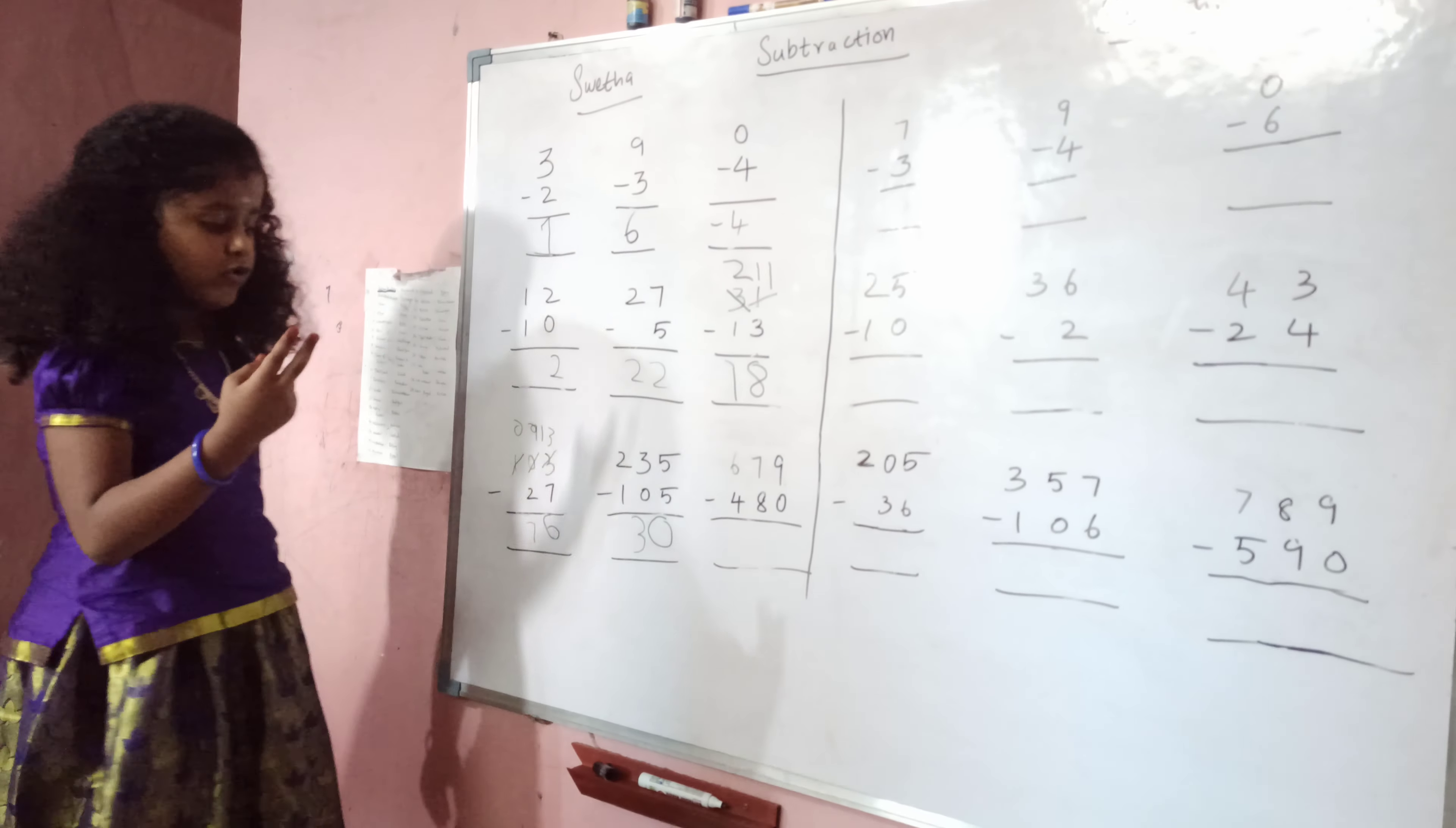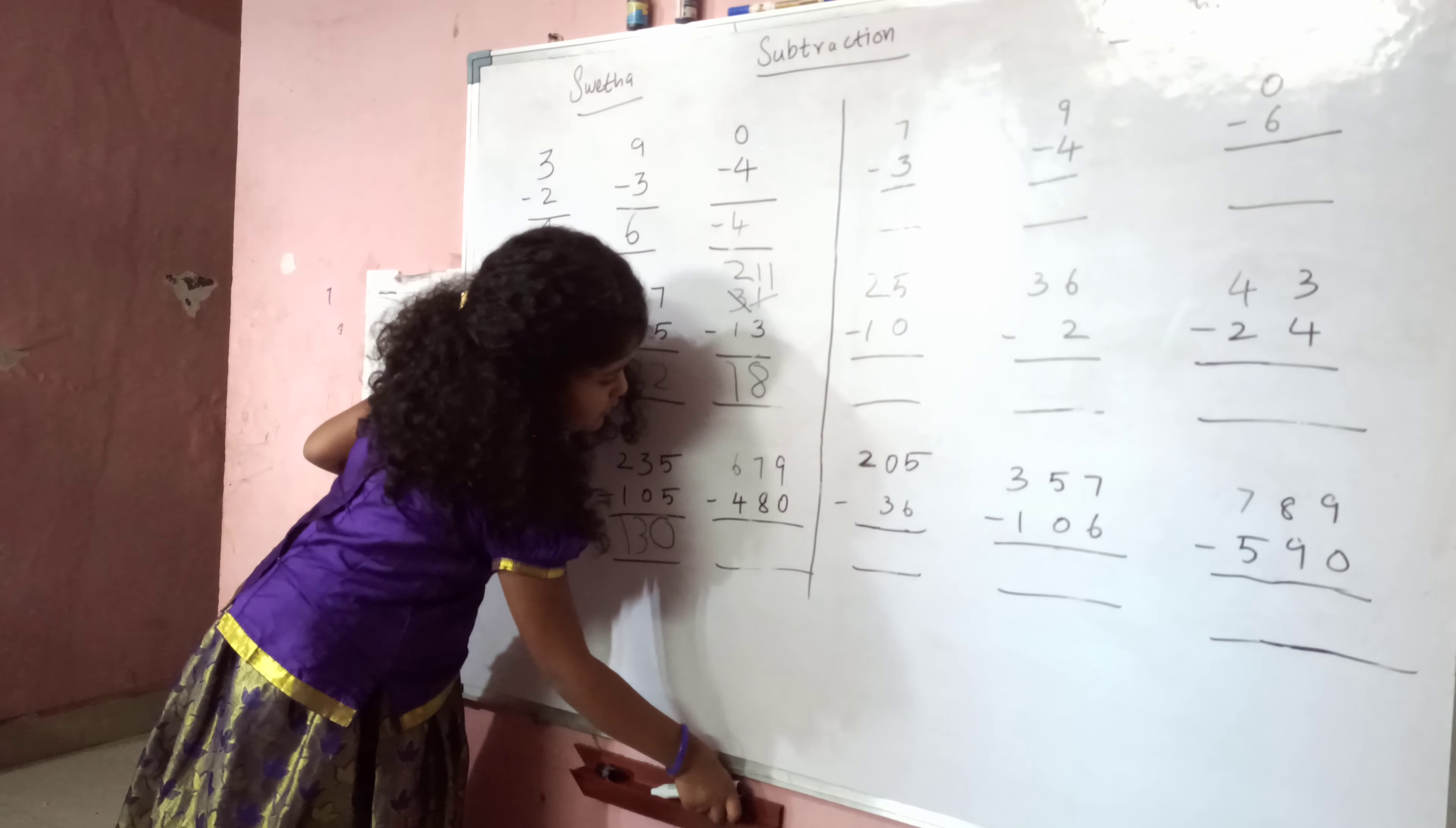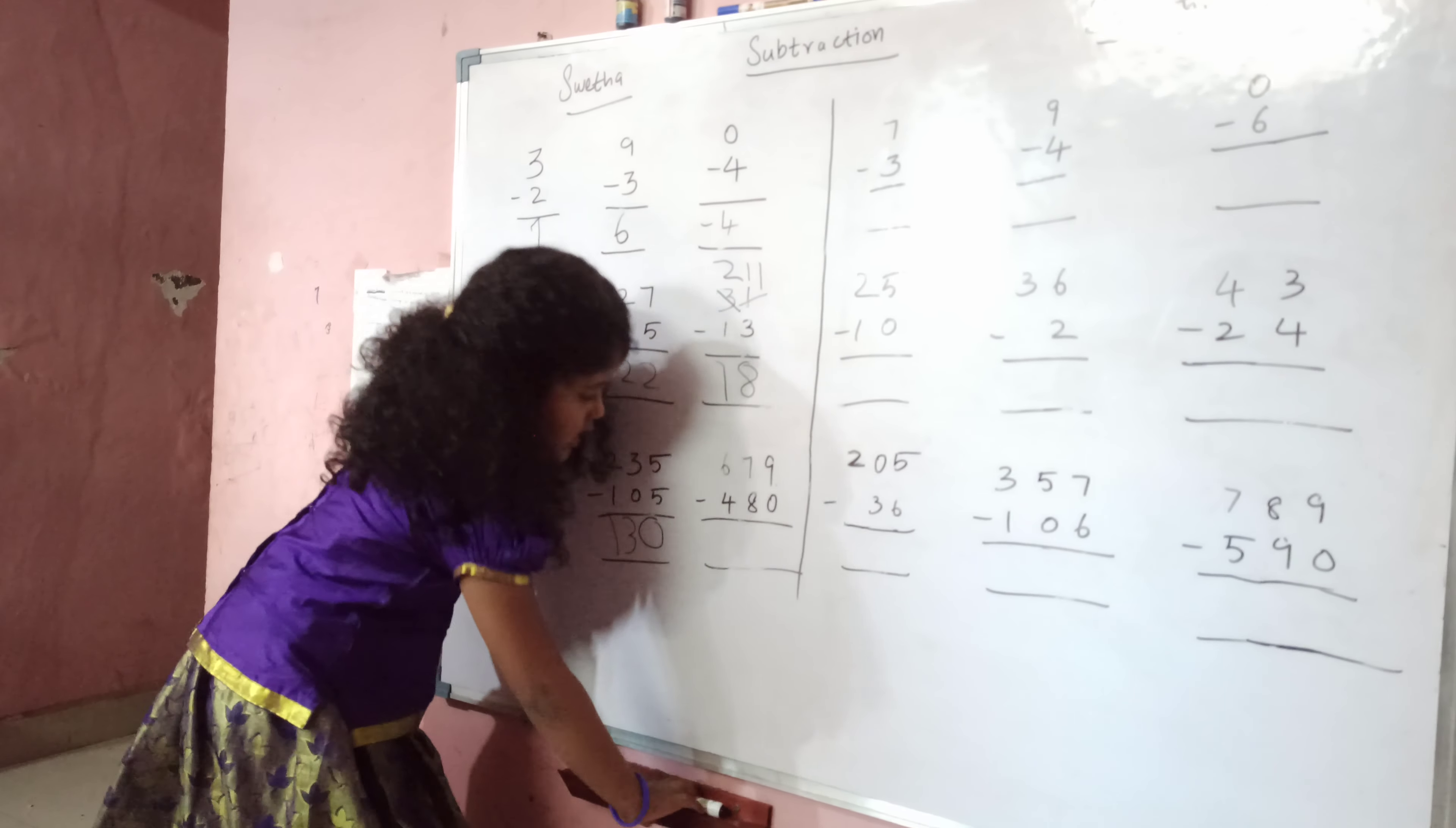Two minus one is one. Nine minus zero is nine.